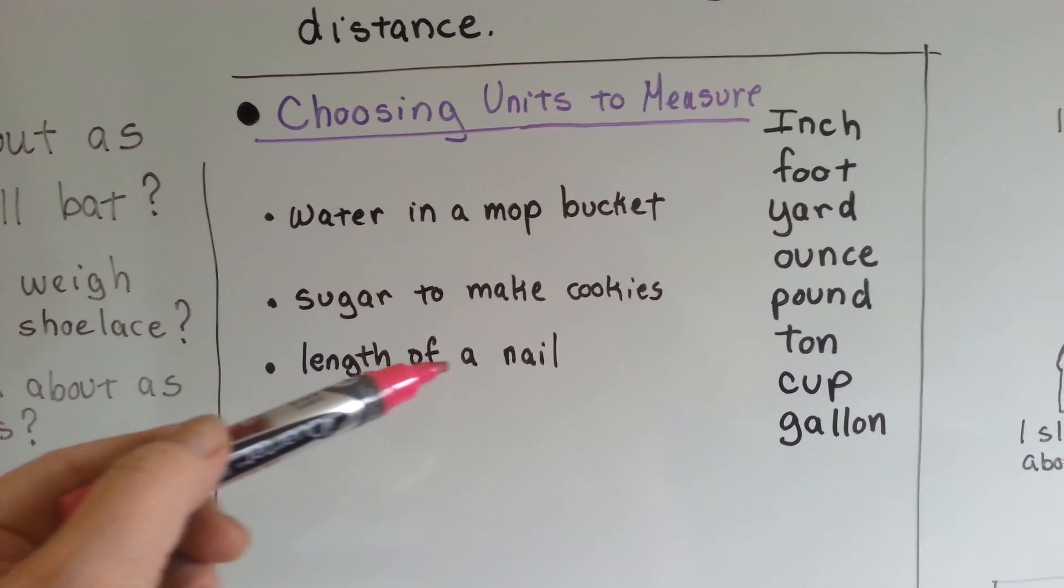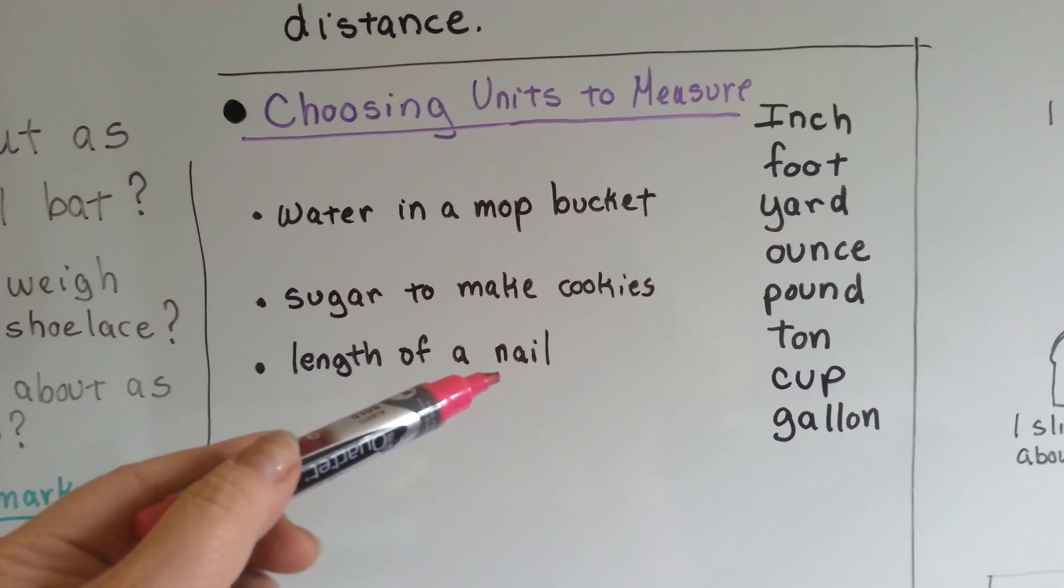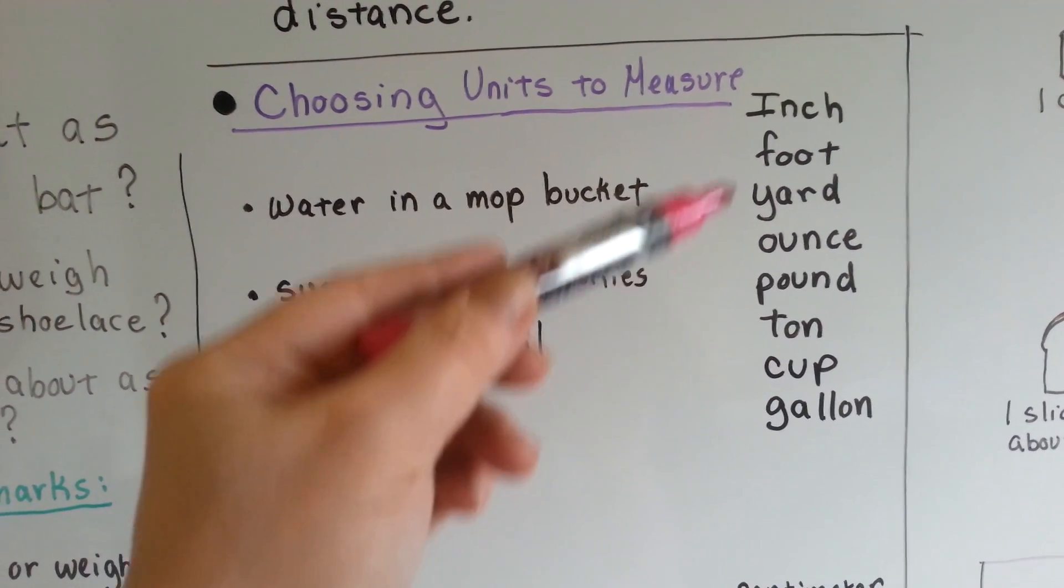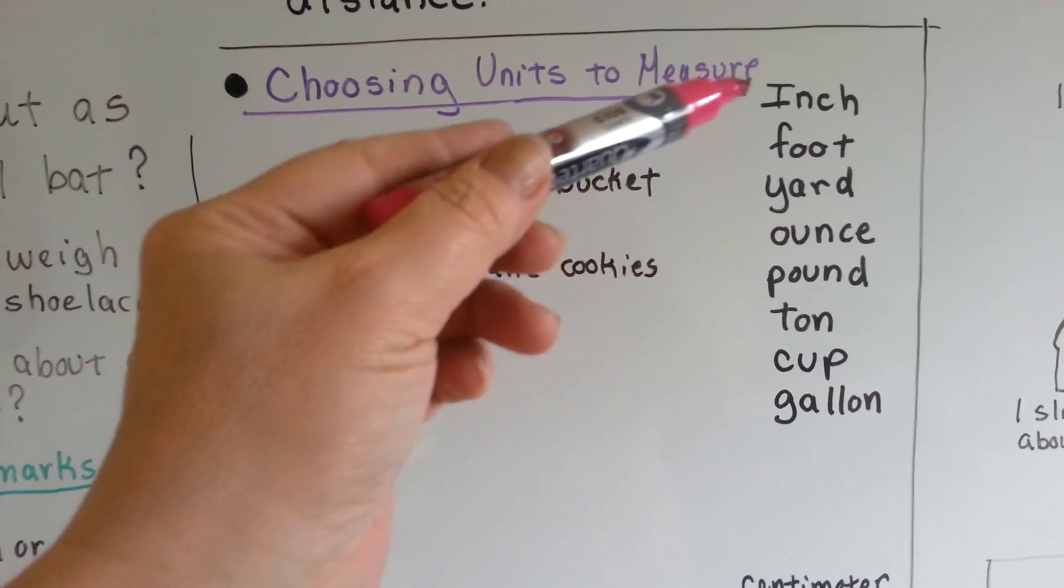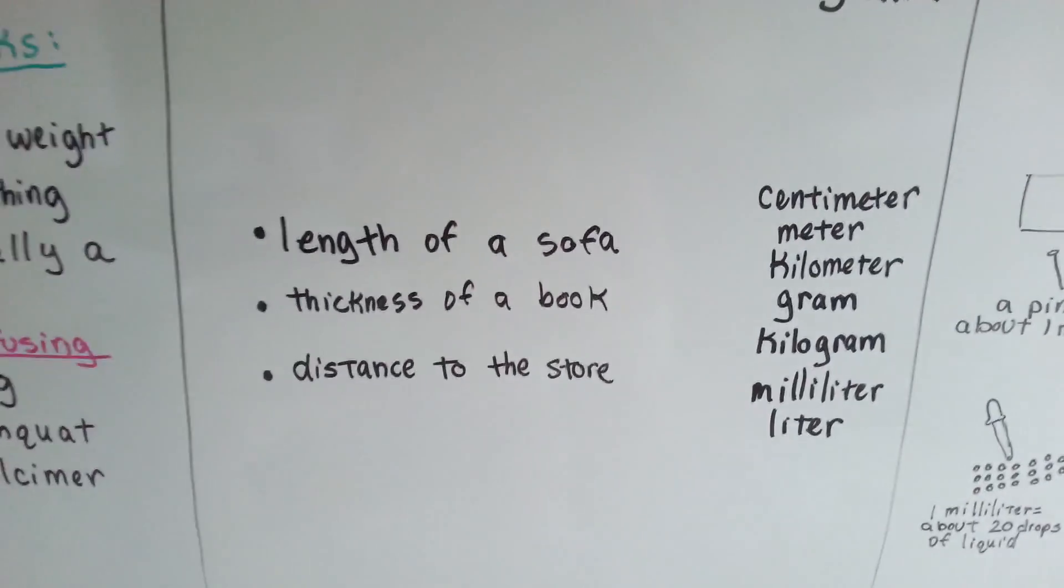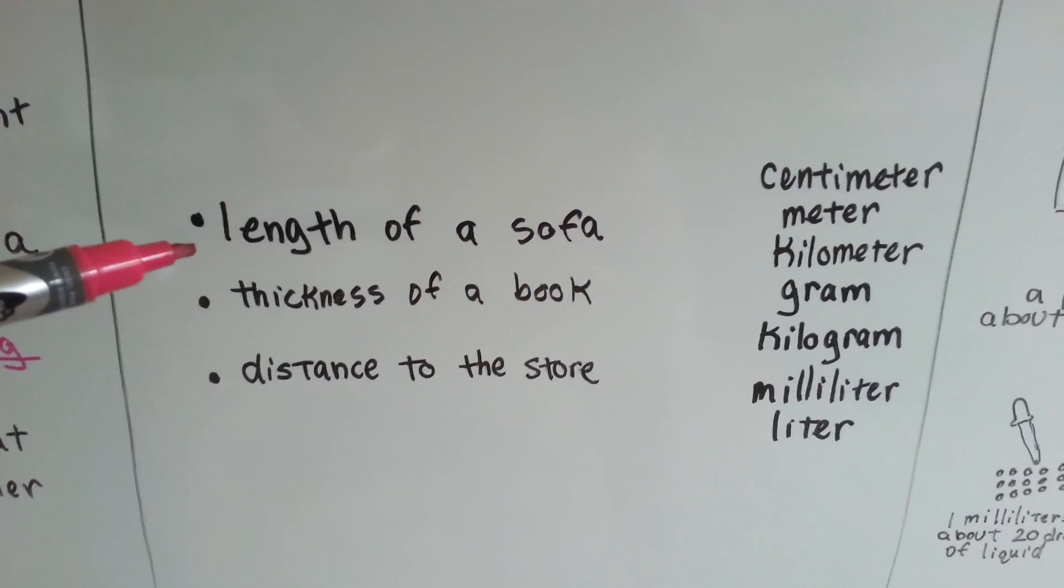If I said the length of a nail to nail into a piece of wood, would you say a ton, or would you say an inch? Oh yeah, it would probably be about an inch. What if I said about the length of a sofa?